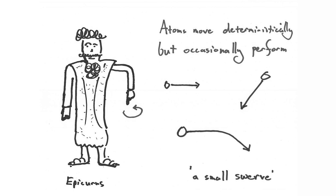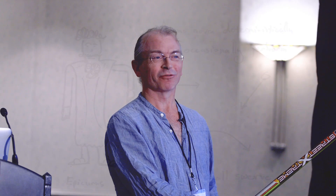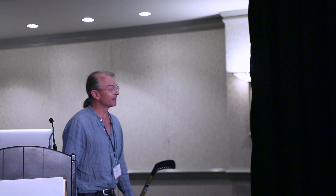2,500 years ago, Epicurus — who was an atomist and adopted Democritus's theory of atoms — said that atoms move deterministically but occasionally perform a small swerve, called the clinamen. Lucretius has him saying, in Latin, that the atoms fall under their own weights colliding with each other, but every now and then give a small swerve. The other reason Lucretius gives is that if atoms did not swerve, then the thing we value most — our freedom of will — would not exist.